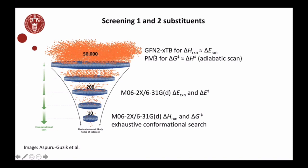What you have here, GFN2-xTB and PM3, are what are known as semi-empirical methods. They're about a thousand times faster than DFT but they're still quantum, so you can calculate barriers or estimate barriers and reaction energies with these methods. Because they're so fast, once you automate the process, with relatively modest computational facilities you can screen about 50,000 molecules in a week or two.